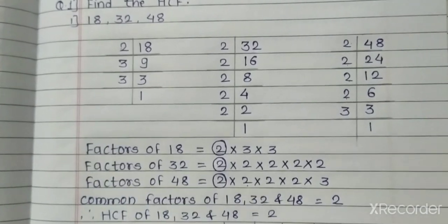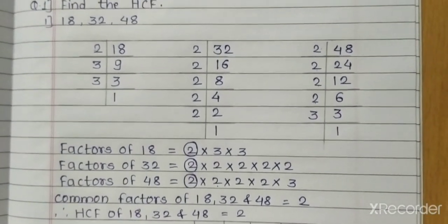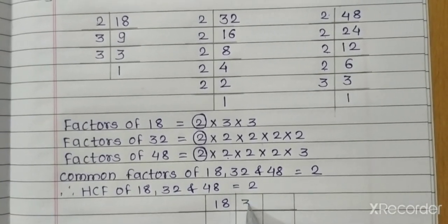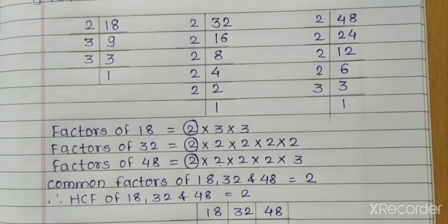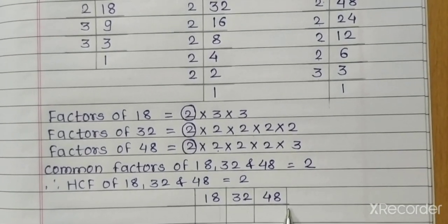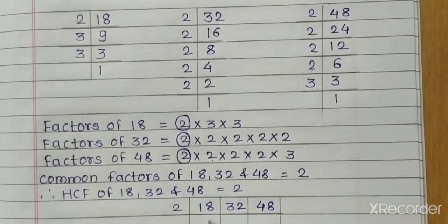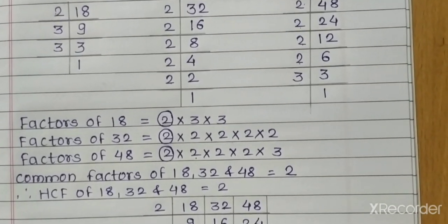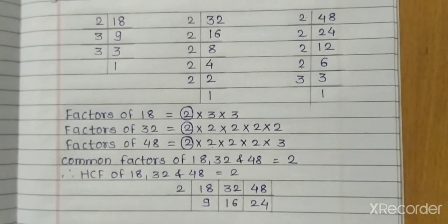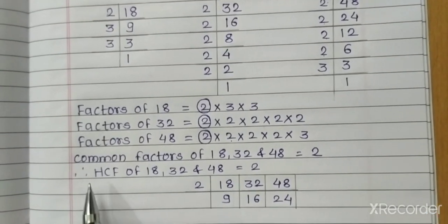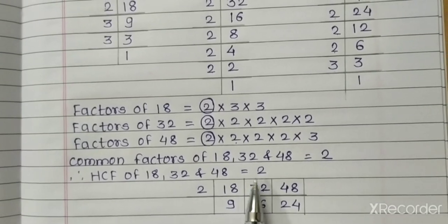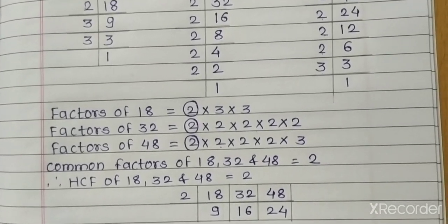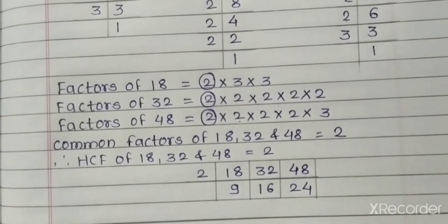This is the prime factorization method for finding the HCF. There is also another method — the division method. Write the numbers 18, 32 and 48. Find which number divides all three — that is 2. Write 2 here: 2 nines are 18, 16 twos are 32, 24 twos are 48. The next numbers 9, 16 and 24 cannot be divided by a common divisor. Therefore, the HCF of 18, 32 and 48 is 2. If one of the given numbers is a divisor of all the others, then it is the HCF.